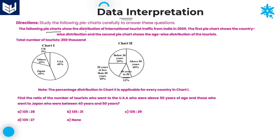The following pie charts show the distribution of international tourist traffic from India in 2009. The information is related to distribution of international tourist traffic from India in 2009. Three countries' names are given and one more category — others. From other countries, that is 15%. UK is 5%. USA is 45%. Japan is 35%.